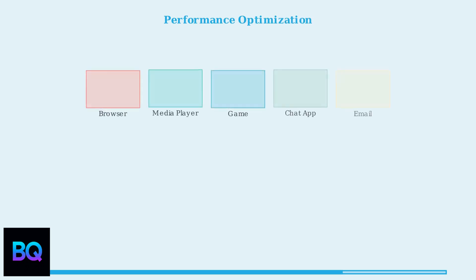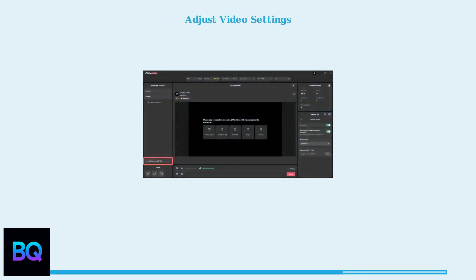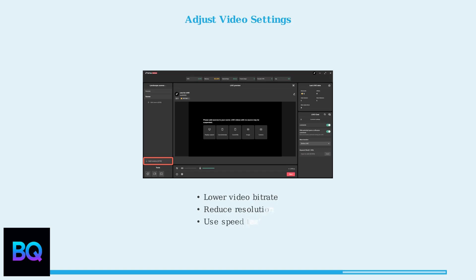Let's optimize performance. Close unnecessary background applications to free up system resources — this includes web browsers, media players, and other programs you're not actively using. Next, lower your video bitrate in Live Studio settings or switch to a lower resolution. Use the built-in speed test tool to choose the optimal resolution for your internet connection.